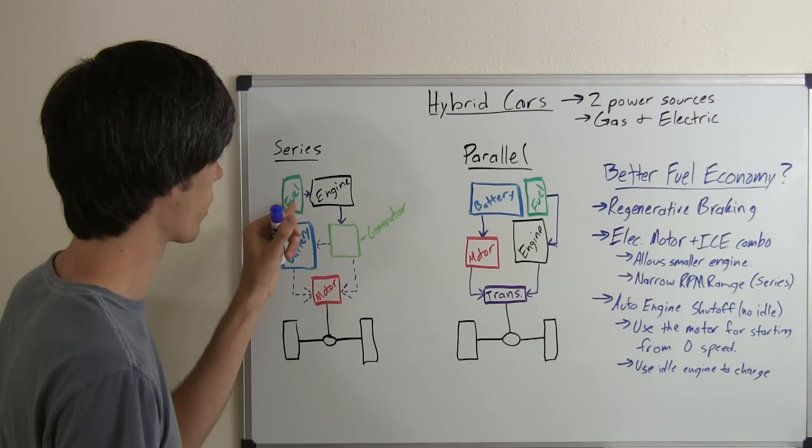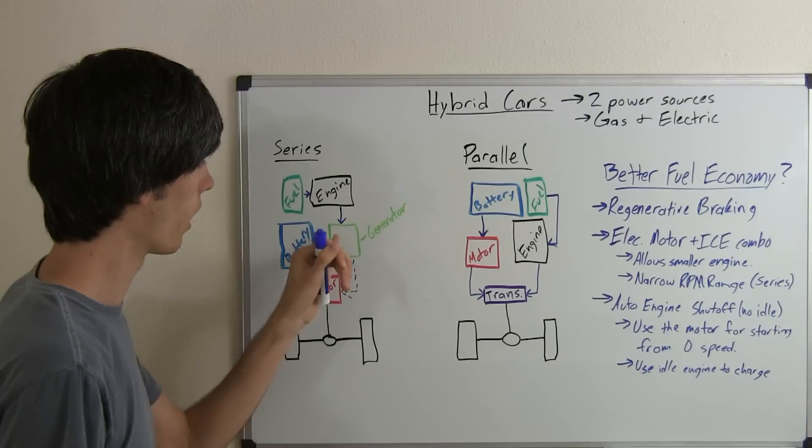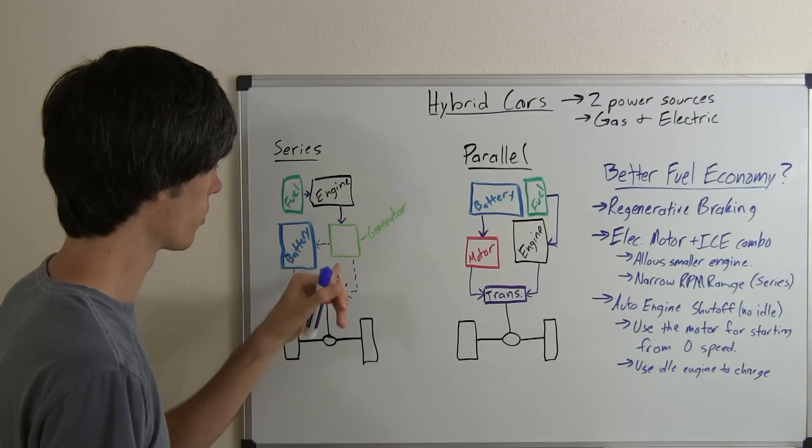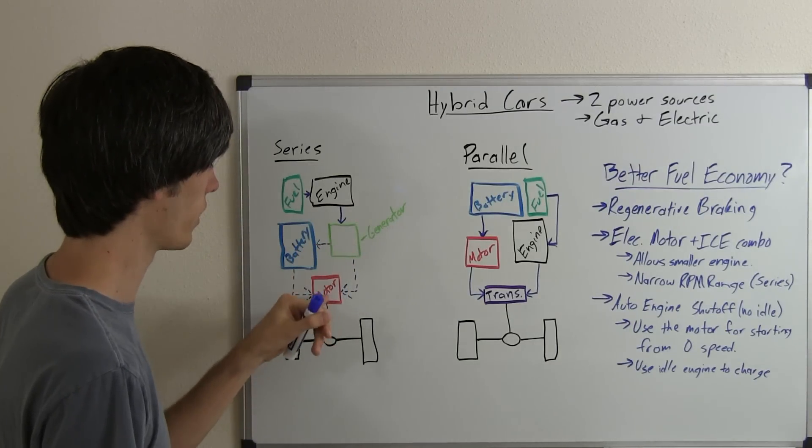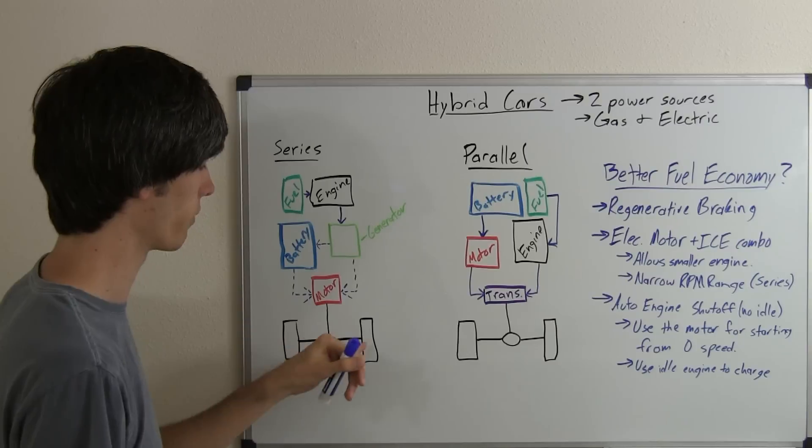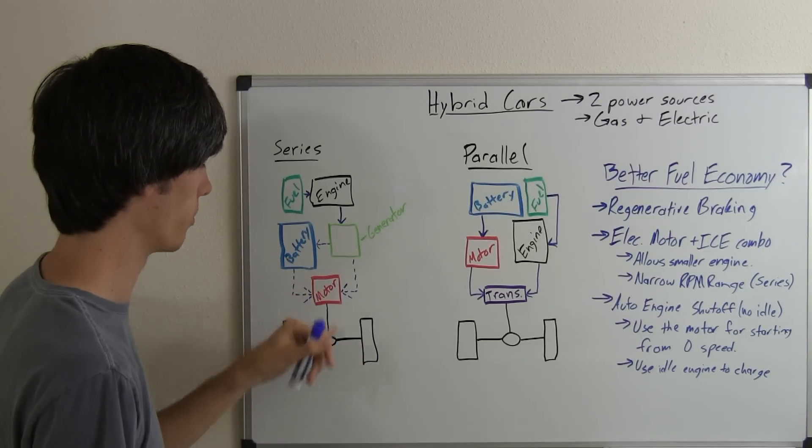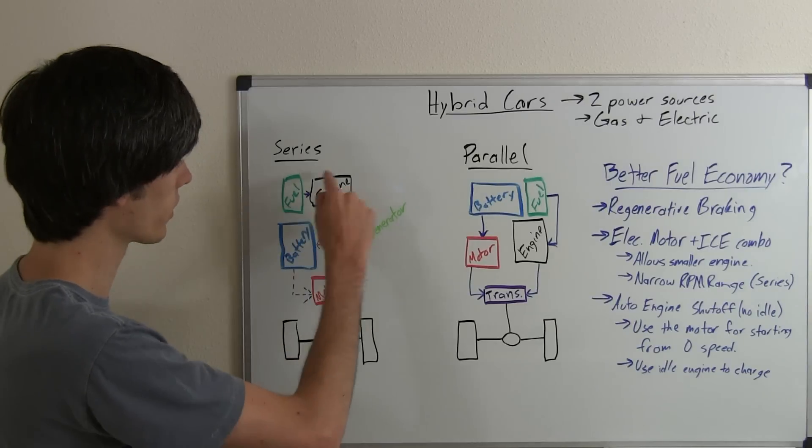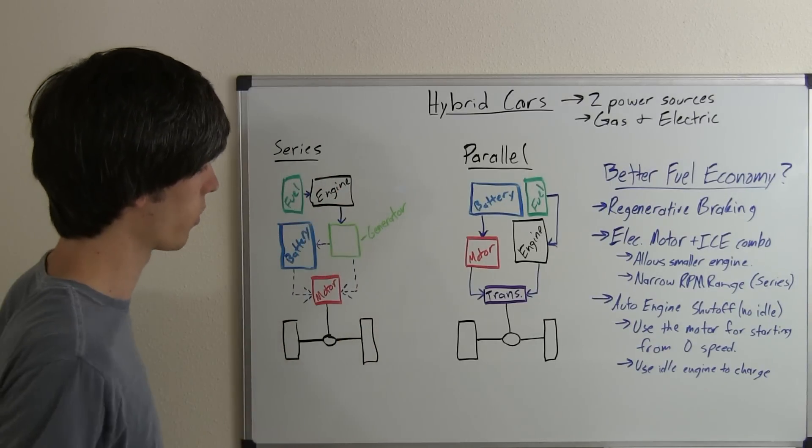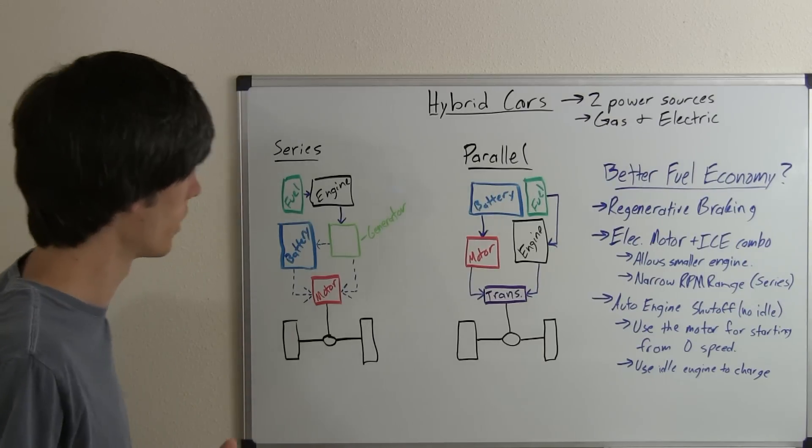We've got fuel which powers our engine. Our engine powers a generator which generates power, which is then used to power the motor which will drive the wheels or to charge a battery. And the battery can also send its power to the motor to turn the wheels. So everything occurs in a straightforward, simple series.